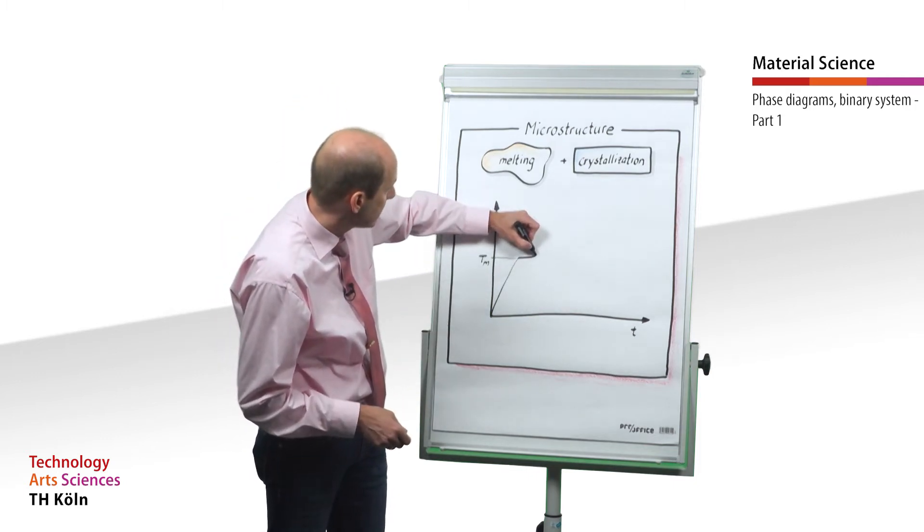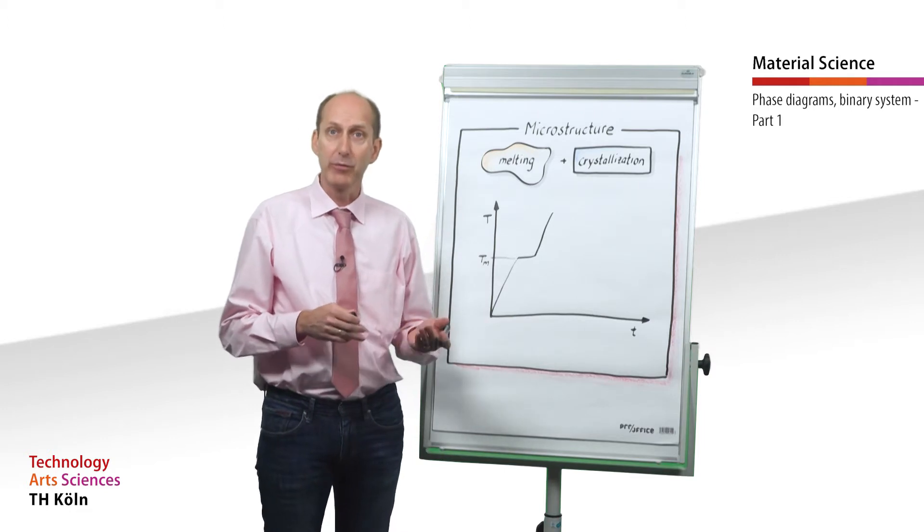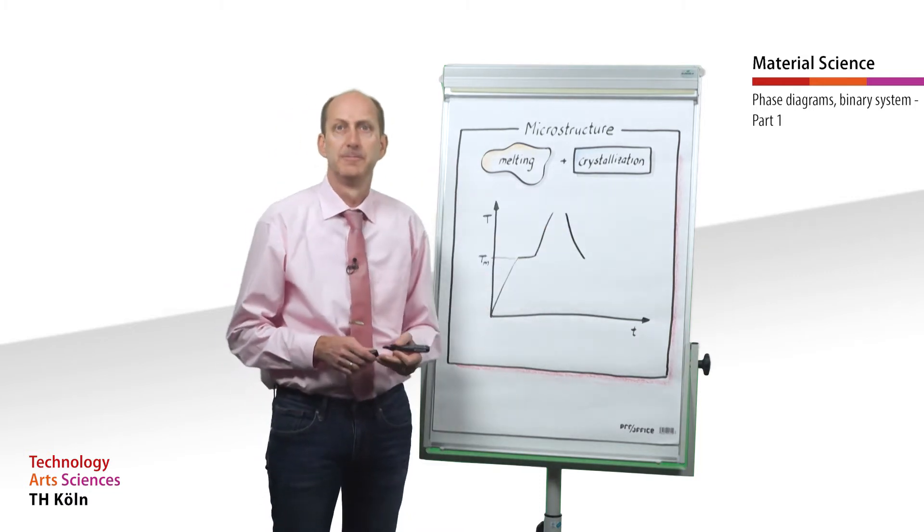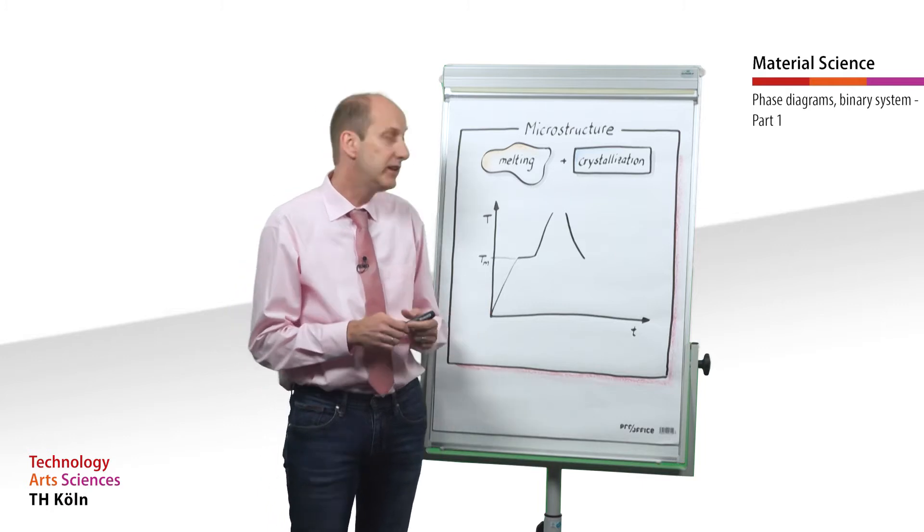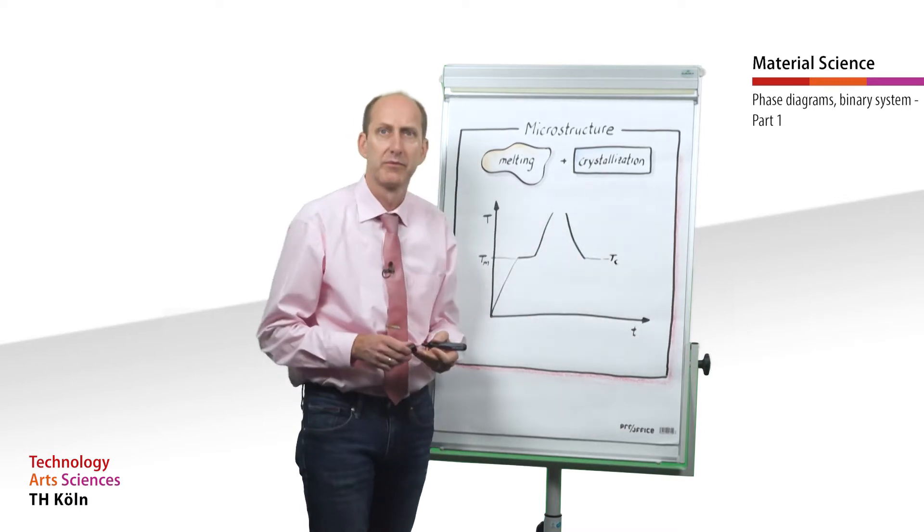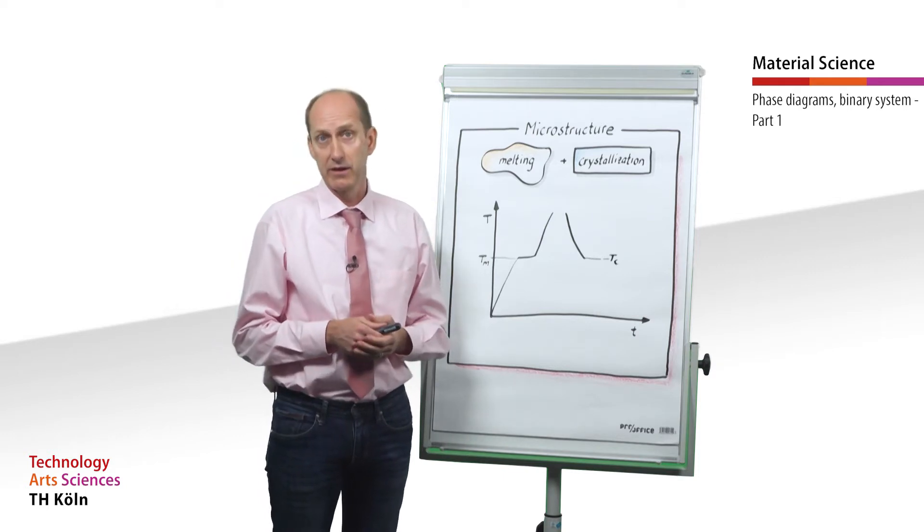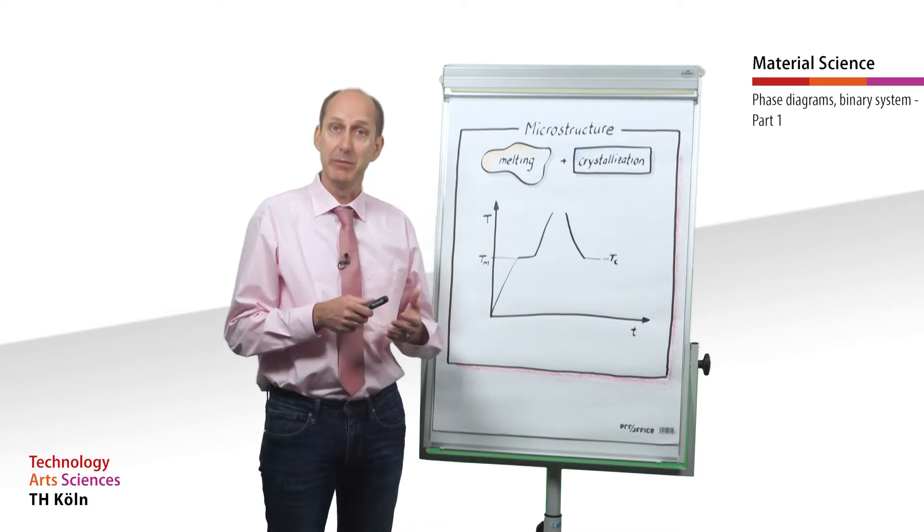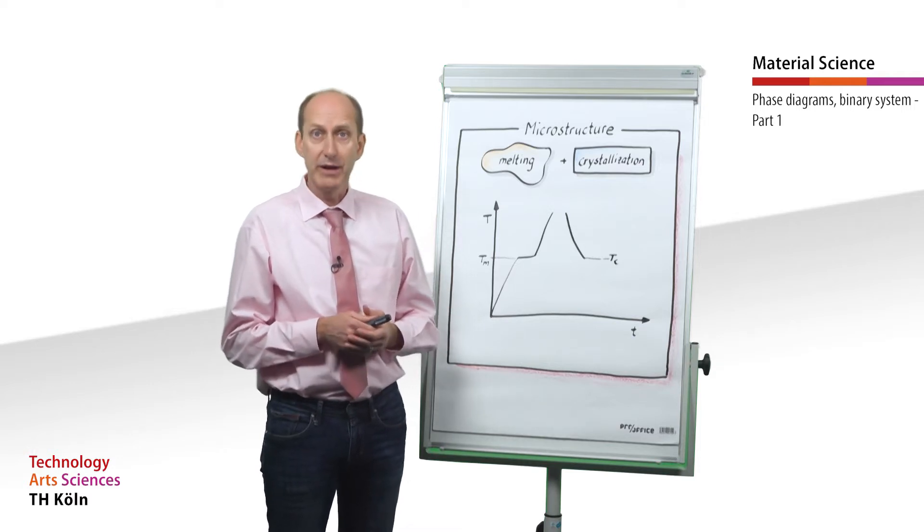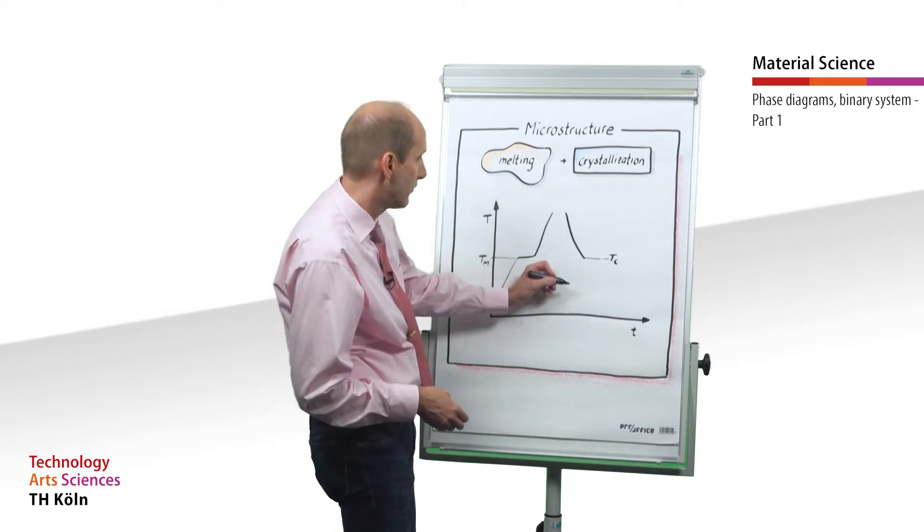After that the temperature can rise again. During cooling of the melt, the temperature time curve follows an exponential curve until the crystallization temperature Tc is reached. The temperature remains constant until the entire melt is solidified. The energy released in this process, supplied as melting heat during heating, is released as heat of crystallization. The temperatures at which the heat and cooling curves display a horizontal curve are called arrest points.